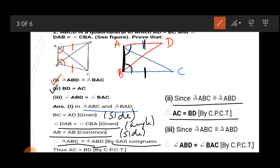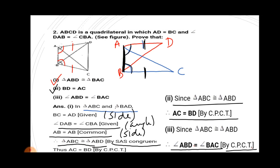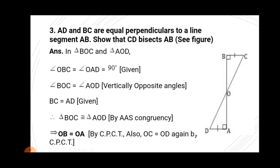Similarly, if triangles are congruent then corresponding angles are also equal, so angle ABD equals angle BAC by CPCT.